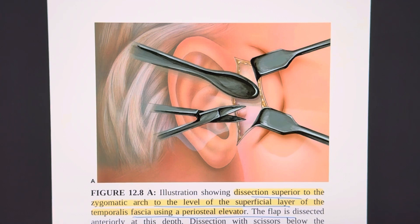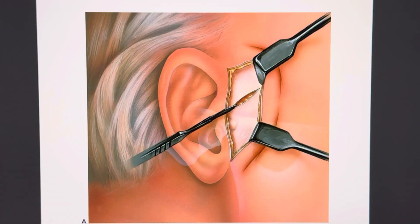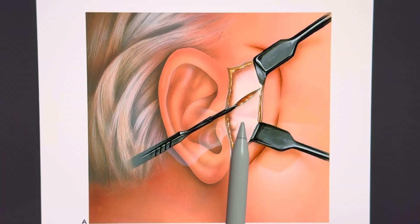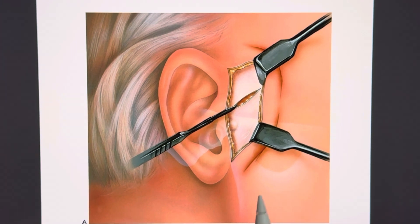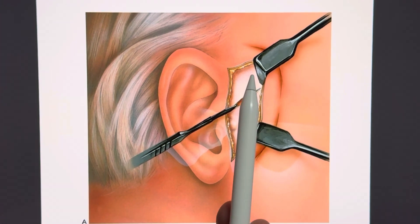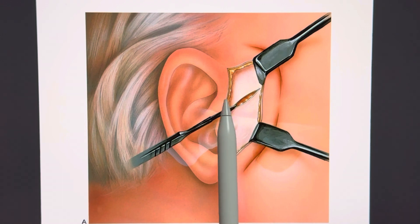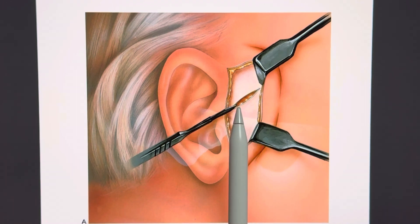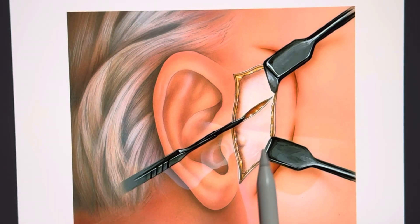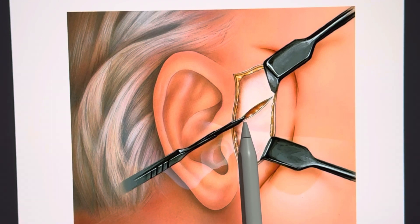The incision is made through the skin, subcutaneous tissue, and the temporoparietal fascia to the depth of the superficial layer of the temporalis fascia. The flap is retracted anteriorly around 1.5 to 2 centimeters, and if the incision is taken to the correct depth, the superficial temporal vessels and the auriculotemporal nerve are in the flap.